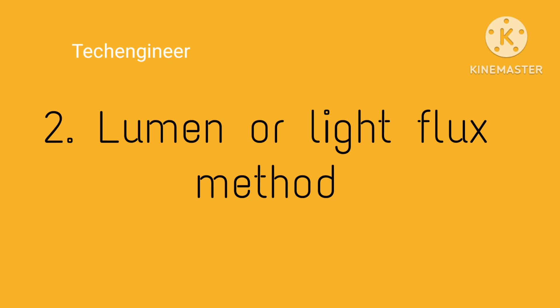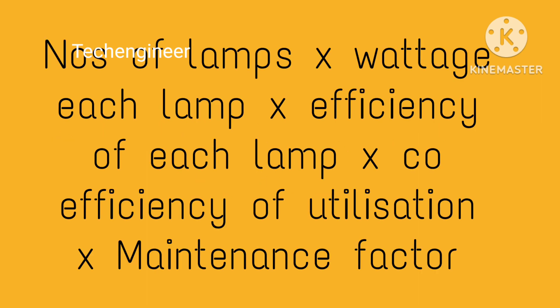In the lumen or light flux method, we have a formula. The formula involves: number of lamps, multiplied by voltage of each lamp, multiplied by efficiency of each lamp, multiplied by coefficient of utilization, and maintenance factors. In the light flux method, we calculate the lumen level.